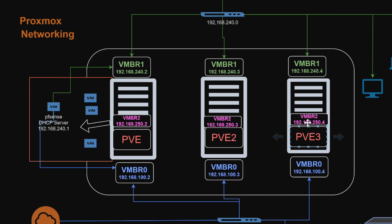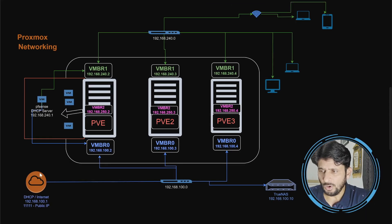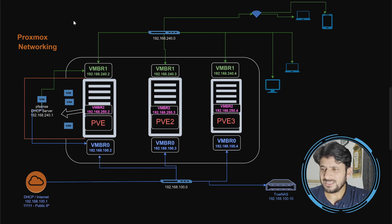I can create one more virtual bridge which will be vmbr2. It is not necessary that a virtual bridge be connected to any physical network — it could be isolated from any network where communication only between VMs takes place. For example, if I'm creating a VM that doesn't need internet or communication with external networks, I can keep it on this isolated bridge. One of the VMs can become the DHCP server and give IP addresses to others within this isolated network.